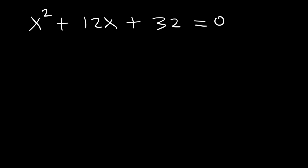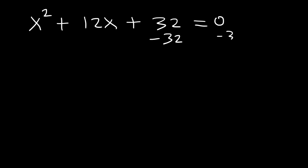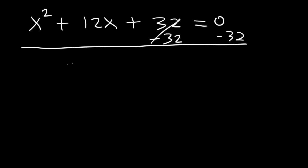So how can we solve this by completing the square? The first thing you should do is move the 32 to the other side. So you want to subtract both sides by 32. And so what we have now is x squared plus 12x is equal to negative 32.